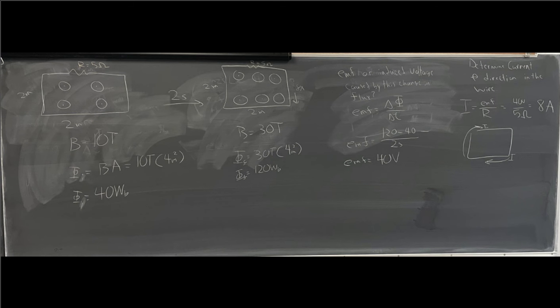As a simple example, we have a square loop with a magnetic field coming out of the board, with dimensions 2 meters by 2 meters and a magnetic field of 10 tesla.